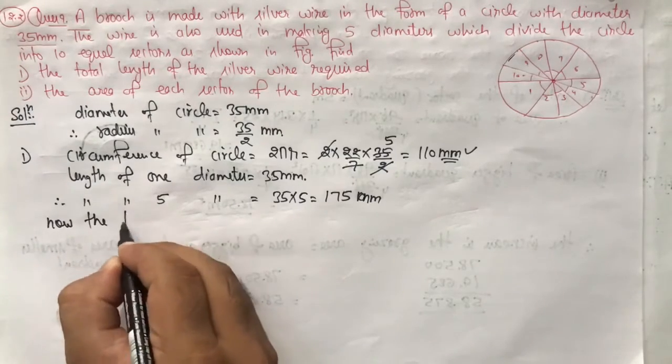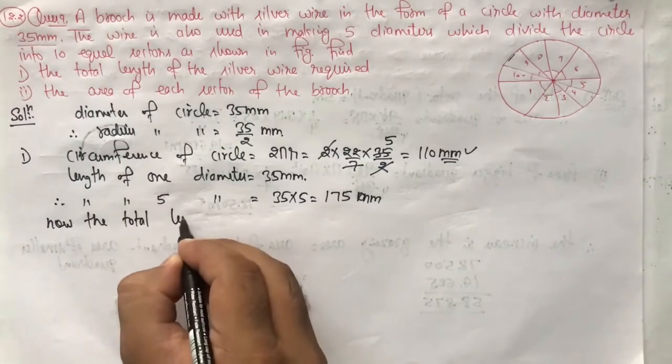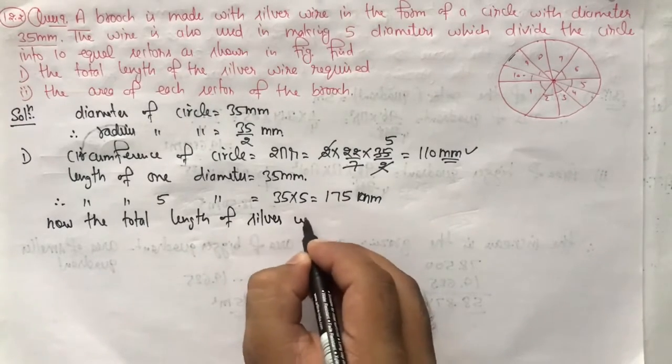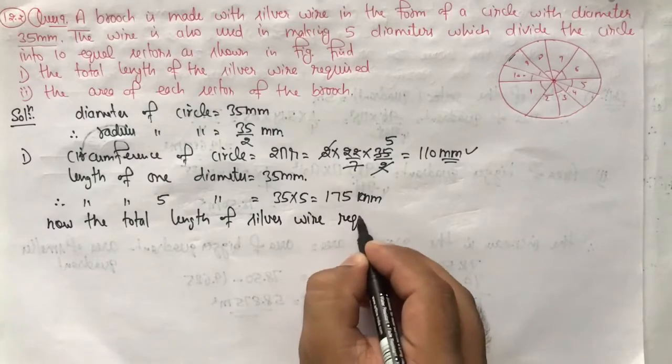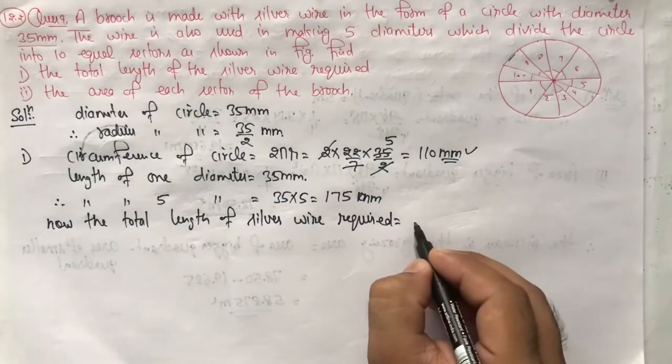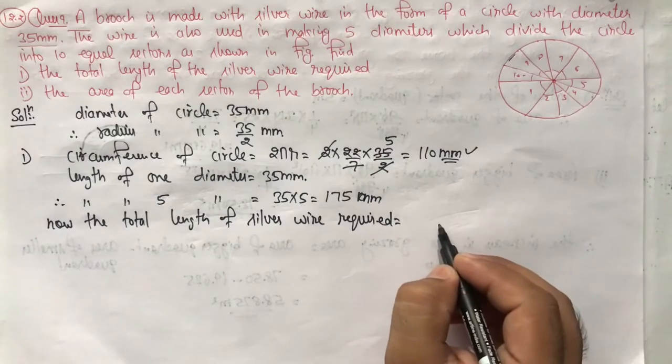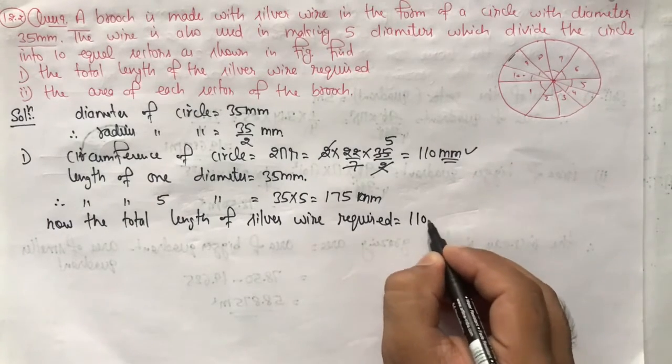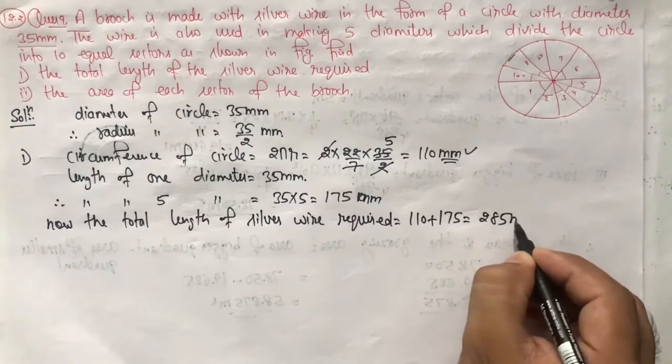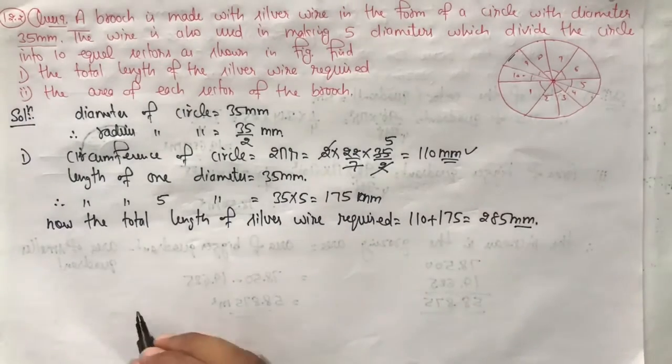Now the total length of silver wire required is equal to circumference plus length of five diameters. That is 110 plus 175, which equals 285 mm.